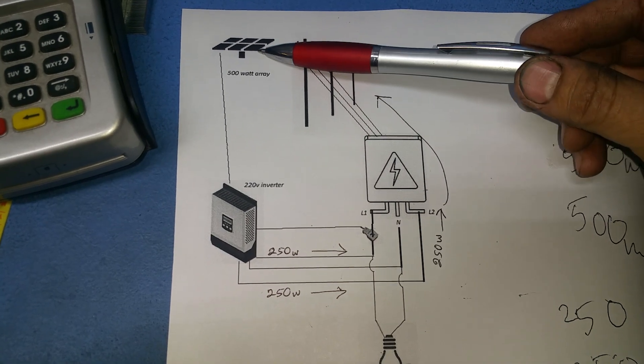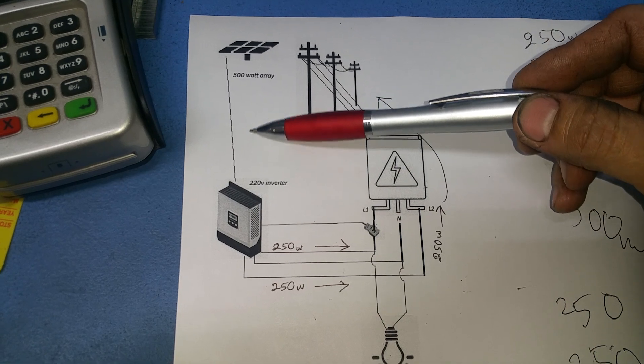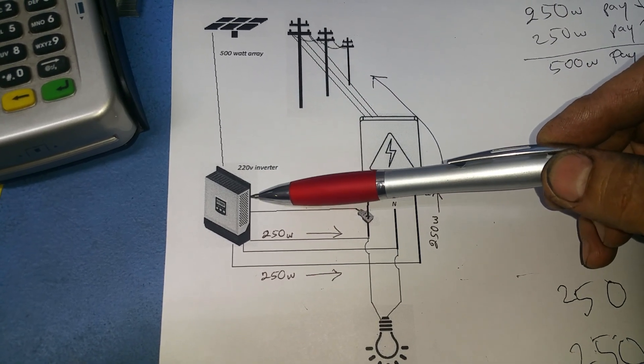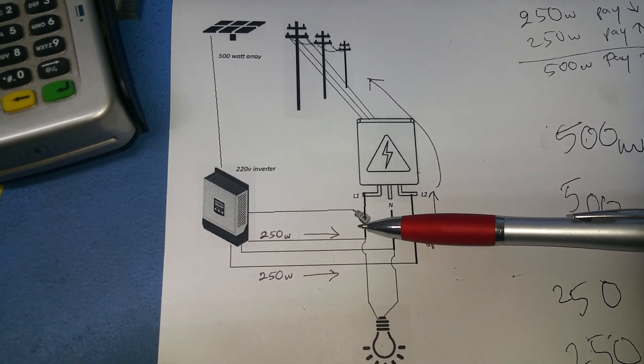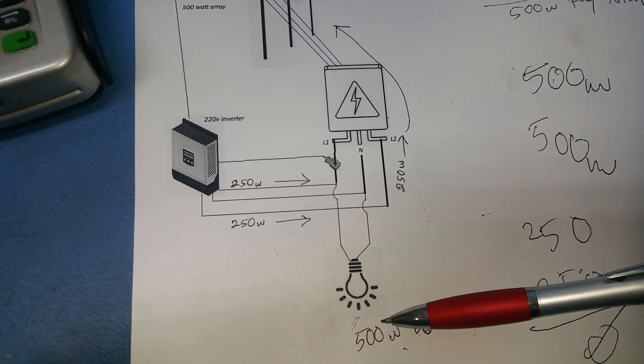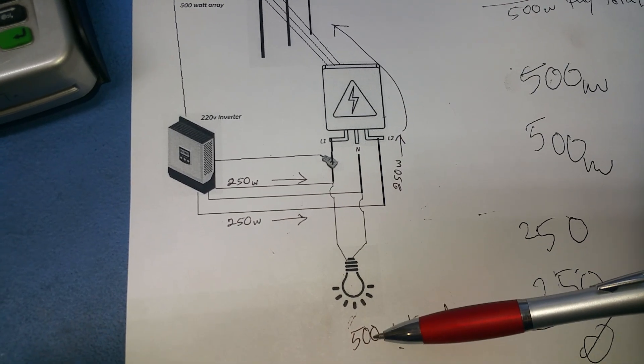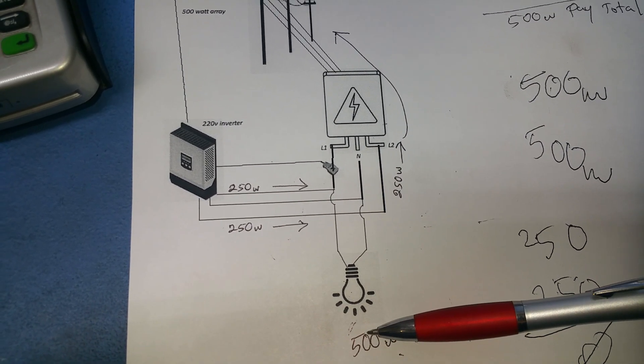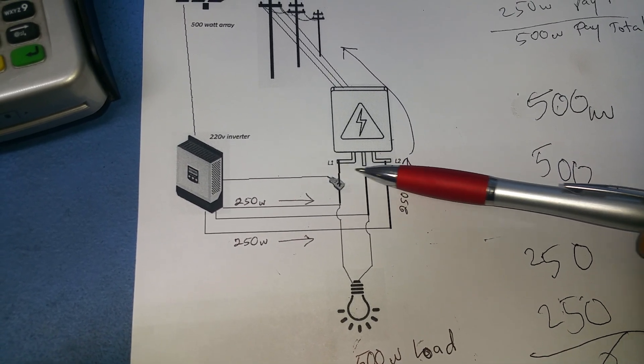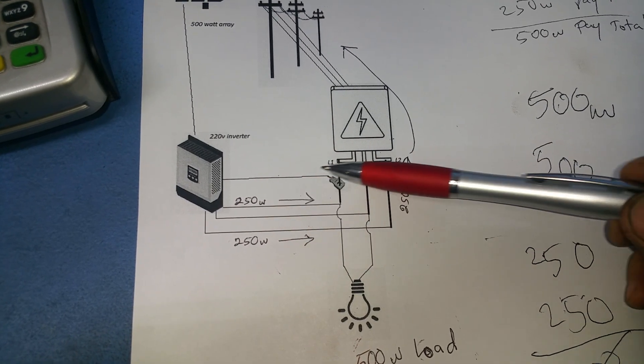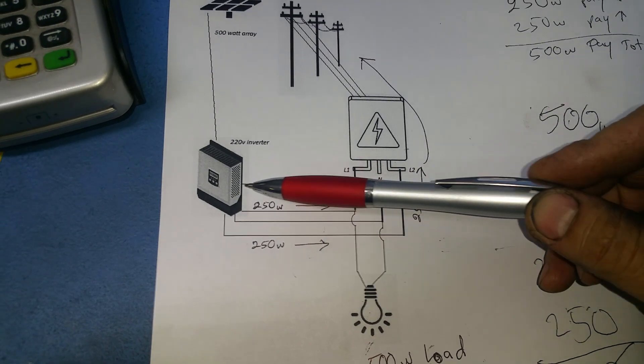I turn on the load and the array puts out 500 watts into the inverter. The inverter has a sensor that sees the load is on, there's 500 watts. This load happens to be 120 volts which is on one of the phases only, in this case L1. The inverter sees that I'm taking out 500 watts, so it will put out 500 watts to accommodate for that.